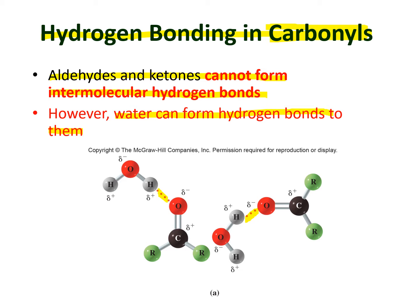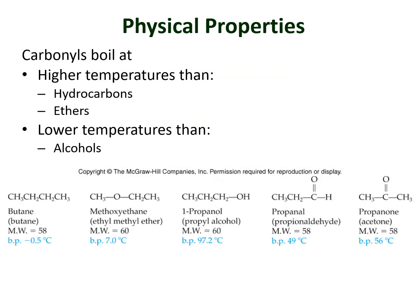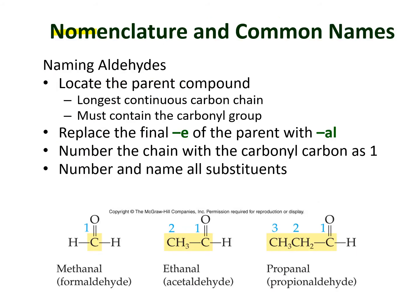Carbonyls have a higher boiling point than hydrocarbons — compounds containing only hydrogen and carbon, like alkanes, alkenes, and alkynes — and also higher than ethers. However, they have a lower boiling point than alcohols. So alcohols have the highest boiling point, then carbonyls, and the lowest are hydrocarbons and ethers.